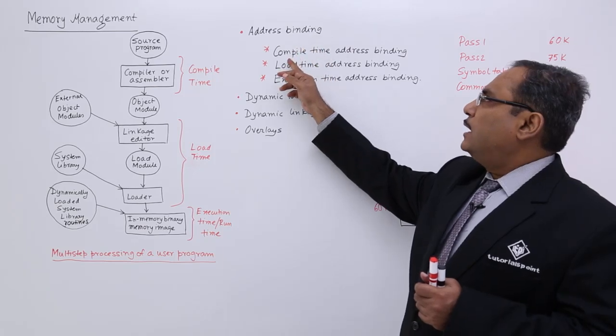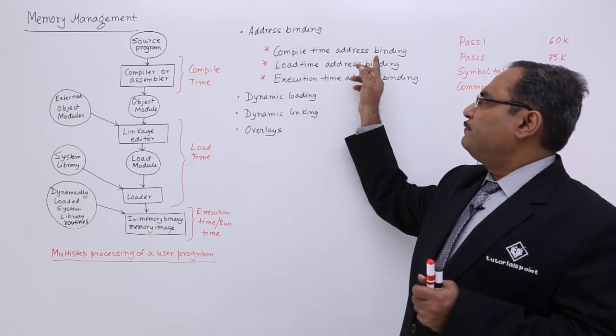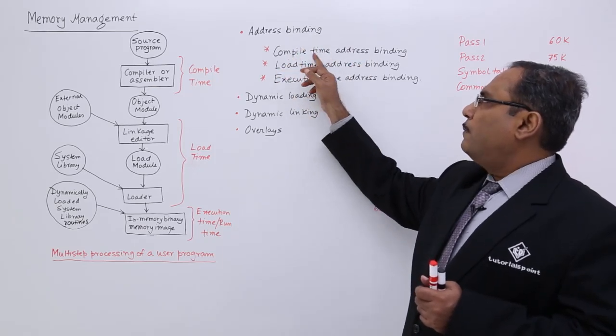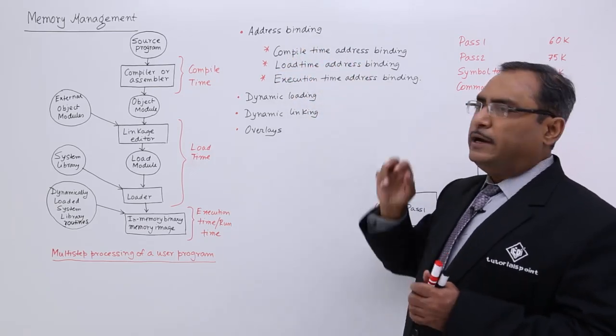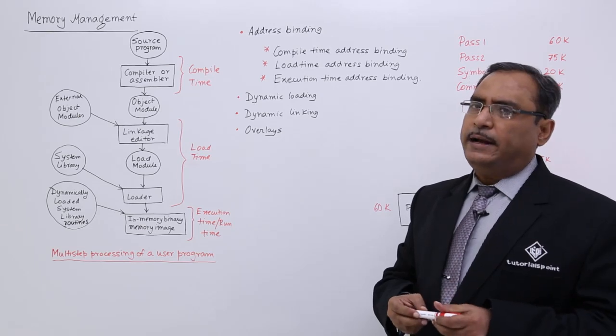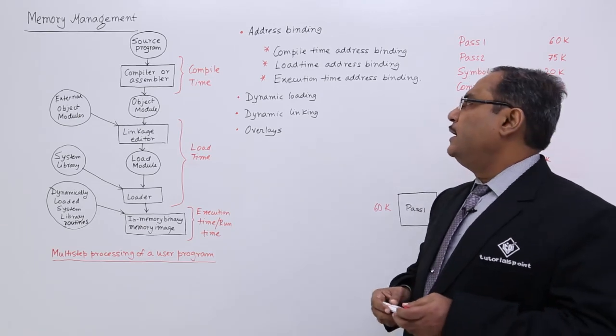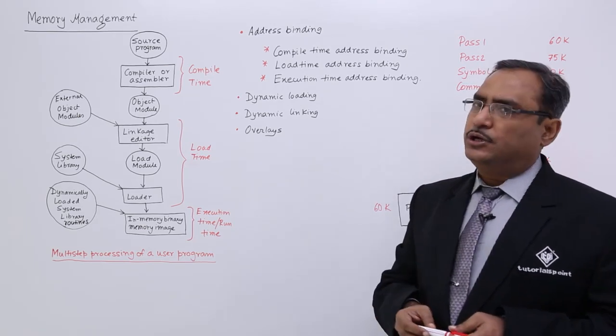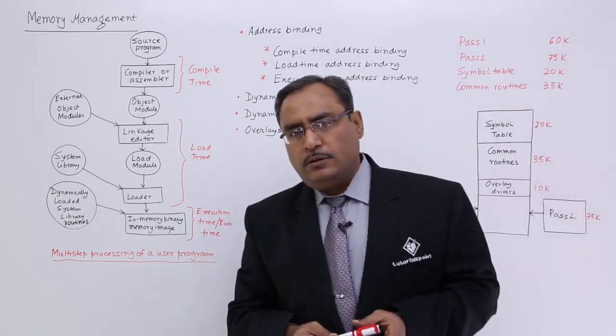Address binding can be done in three different forms: compile time address binding, load time address binding, and execution time address binding.